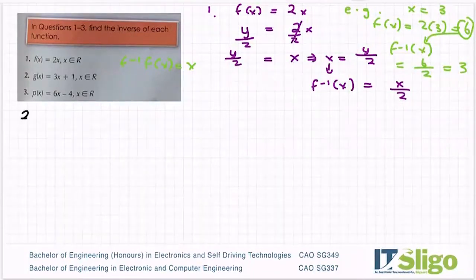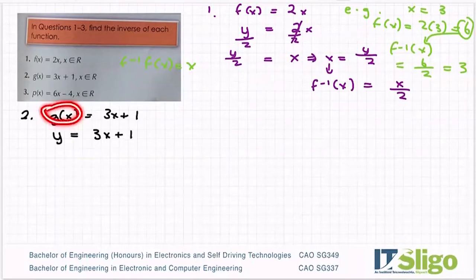Let's do question 2 down here. g(x) in this case is equal to 3x plus 1. So the first step, write it in terms of y. g(x), your function is always y.